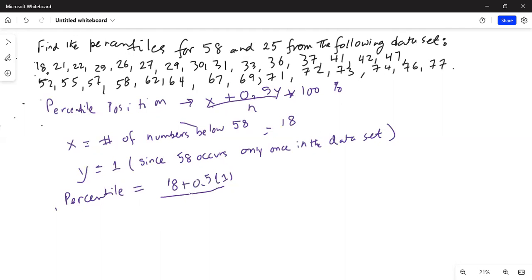And the whole thing is multiplied by 100. So this becomes equal to 18 plus 0.5 divided by 29, whole thing multiplied by 100, which is equal to 18.5 divided by 29 multiplied by 100.